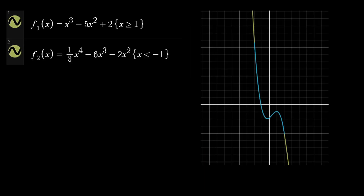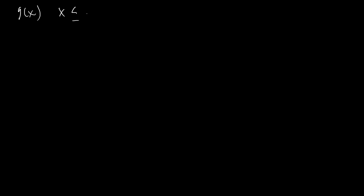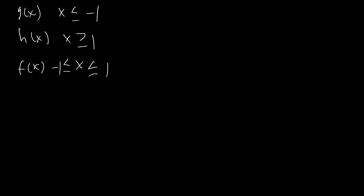So in this case, f1 of x is defined for x greater than one, and f2 of x is defined for x less than negative one. We have another function of x which is able to cleanly connect them, and we're going to go over how we can actually find this middle function — the blue function. We're going to assume we have g of x defined for x less than or equal to negative one, h of x defined for x greater than or equal to one, and we want to find f of x defined between negative one and one. We require our function to have four properties.